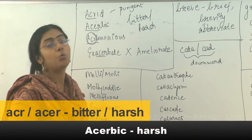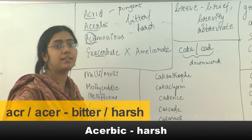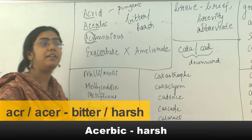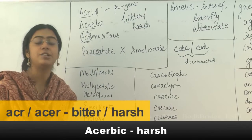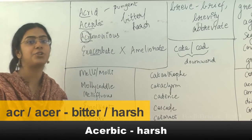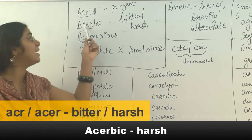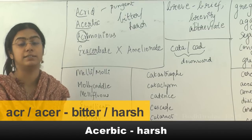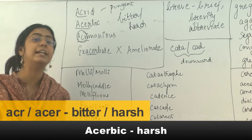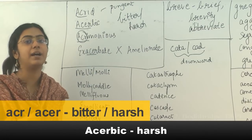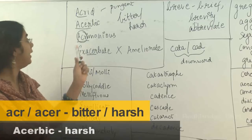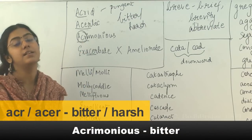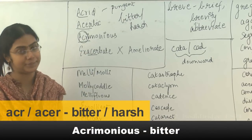Acerbic: when I say something extremely sarcastic that hurts you and I mean to be very harsh with you, then I am being acerbic. I have an acerbic tongue, which means I can easily hurt people with my comments. Acrimonious again means bitter.